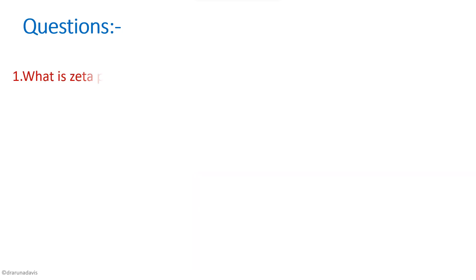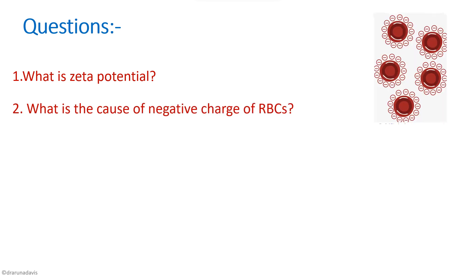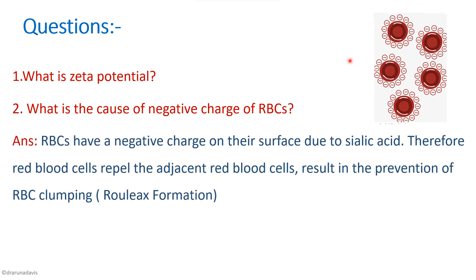Common questions include: what is zeta potential and what causes the negative charge of RBCs? RBCs have a negative charge on their surface due to sialic acid. Because of this negative charge, like charges repel, preventing clumping of RBCs inside the body.